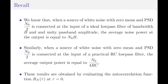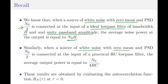Coming back to the topic of this discussion — noise equivalent bandwidth — let us recall the video on passing white noise through an ideal low pass filter. We discussed that when a white noise process with zero mean and power spectral density N0/2 is passed through an ideal low pass filter of bandwidth B and unity pass band amplitude, the average noise power at the output is equal to N0·B. Similarly, when we pass the same white noise process through a practical RC low pass filter, the average output power is equal to N0/(4RC). I have derived these terms in my previous videos, so please refer to them.